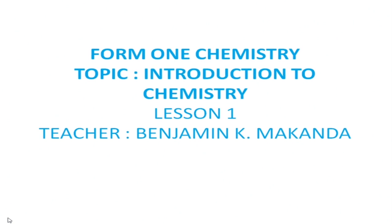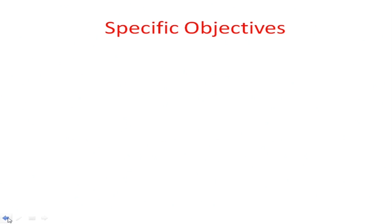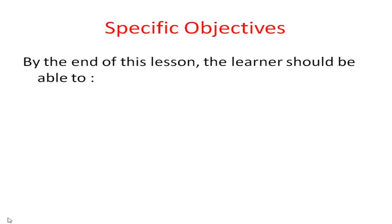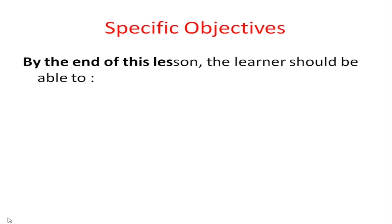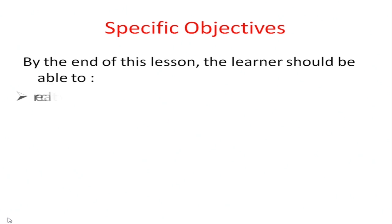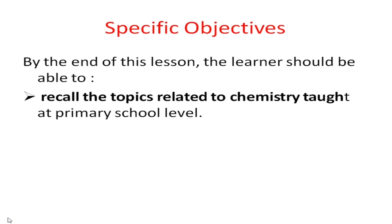Now we are going to go through the specific objectives of this lesson, so that once we finish, the following should be achieved. By the end of this lesson, the learner should be able to recall the topics related to chemistry taught at primary school level.